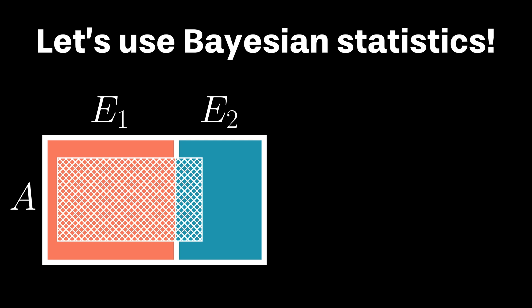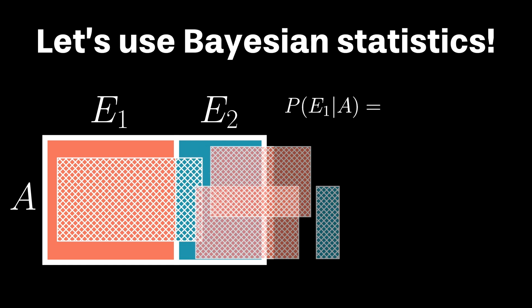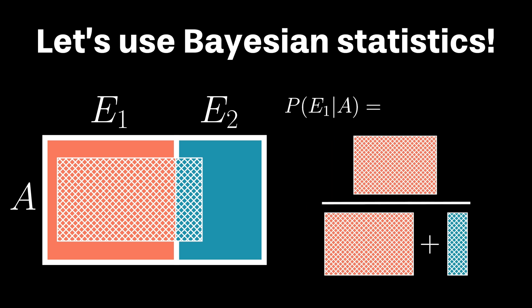So, what is the chance, then, that E1 is the right one given that A has occurred? According to the diagram, it would be the chance of the red-hashed area relative to the total area of A. Or, in other words, the total probability of observing A and having E1 be the correct model relative to the total chance of observing A.